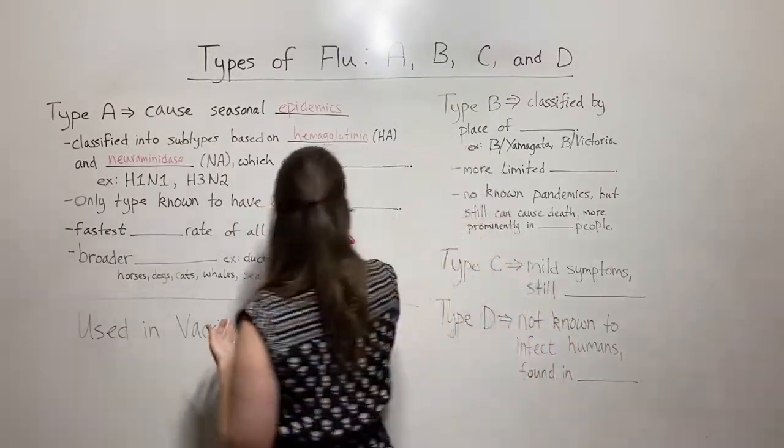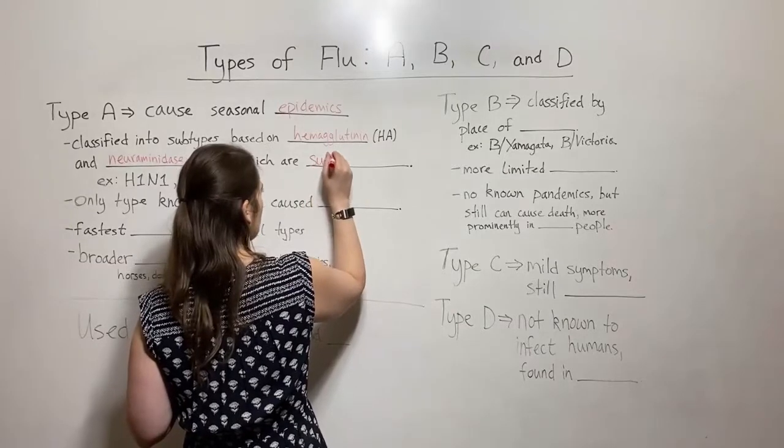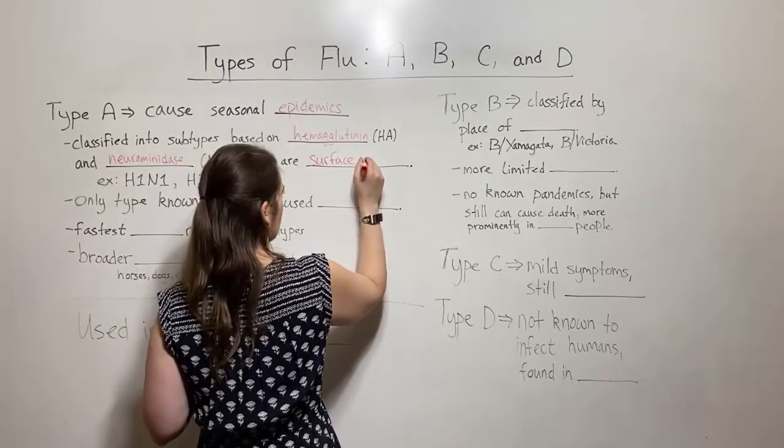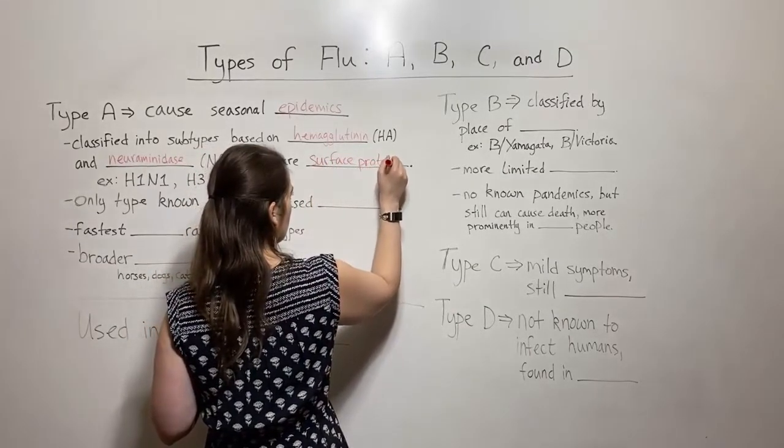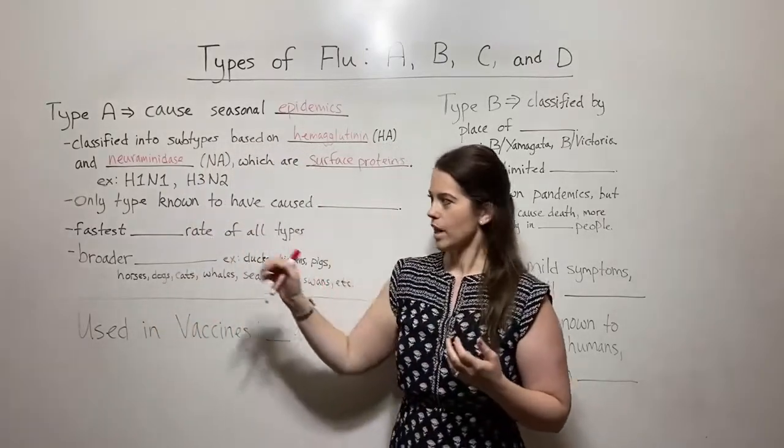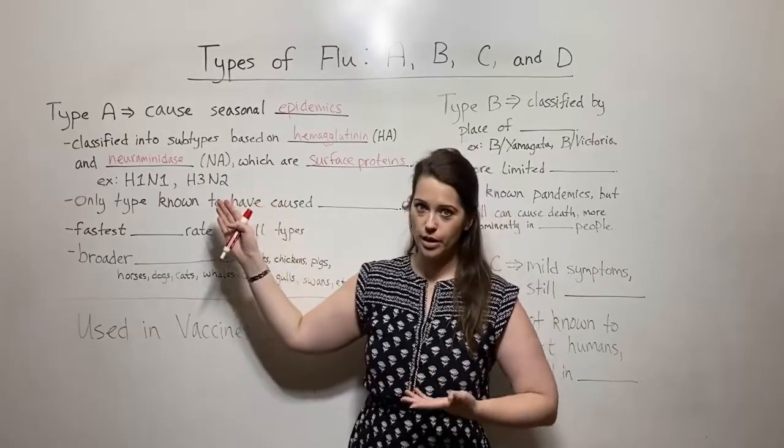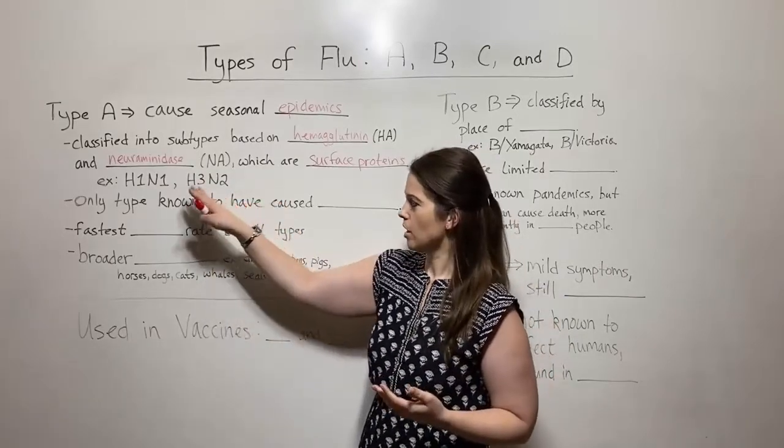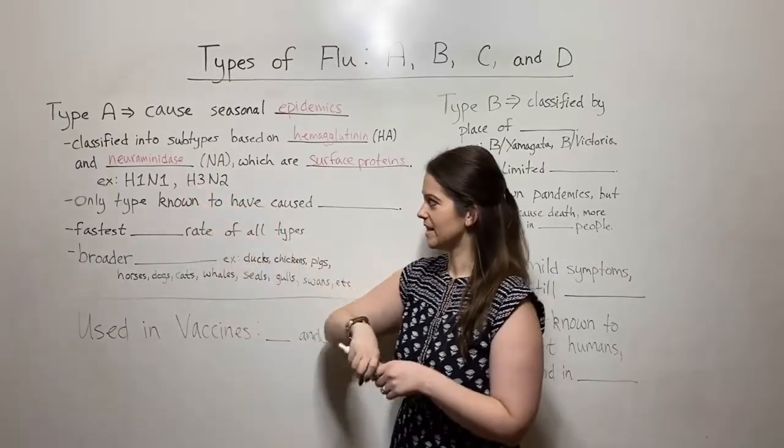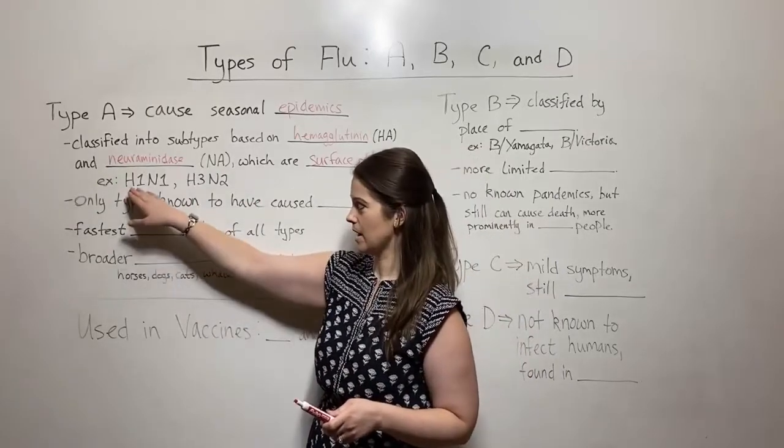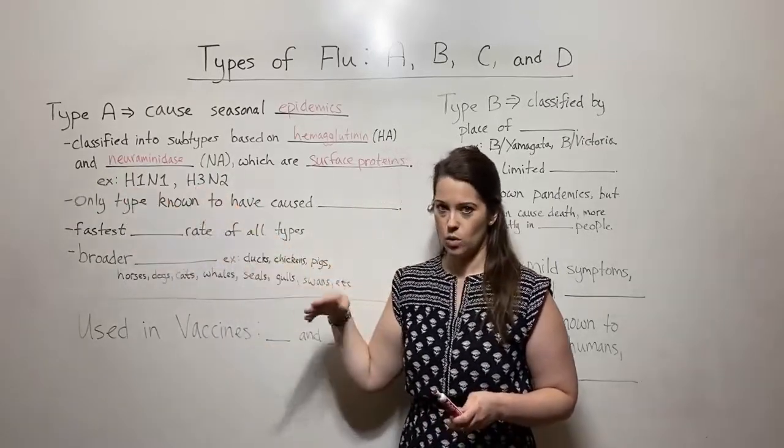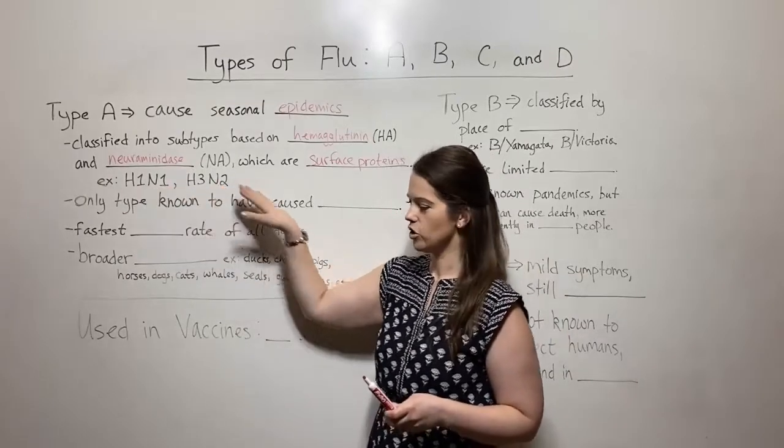These are surface proteins. And so when we're talking about H1N1 or H3N2, these are both currently circulating strains. We're talking about strains that have slightly different hemagglutinin. So this one has the H1, this one has the H3, or slightly different neuraminidases. That's the N1 or the N2.